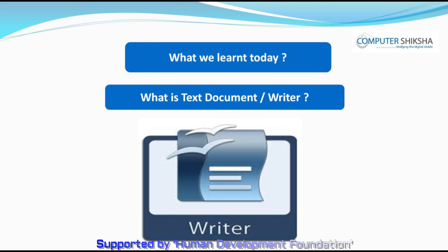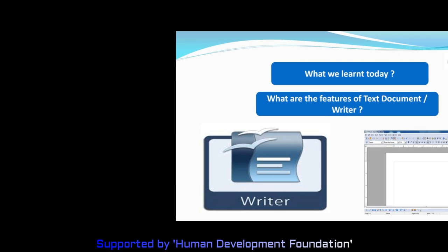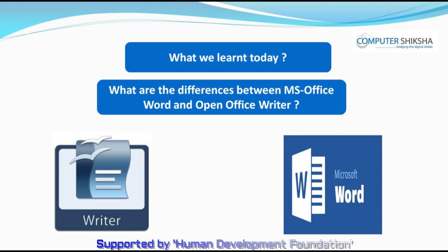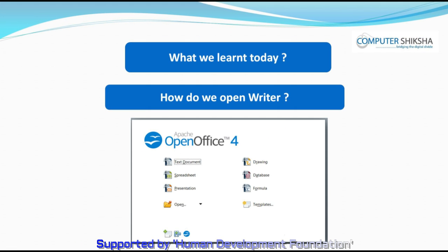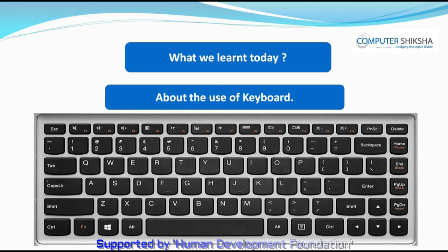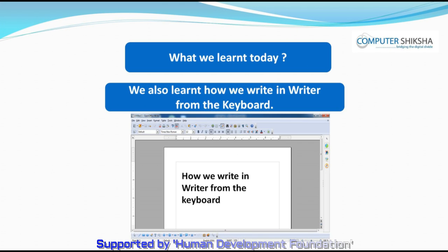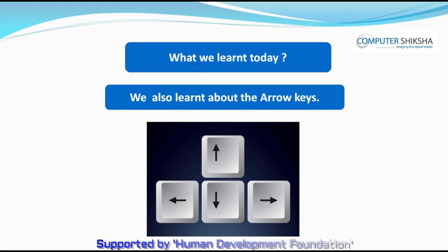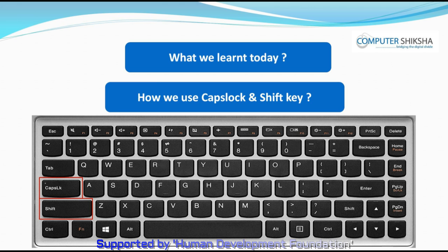In today's class, we learned what is Writer and what are the various features of Writer. We learned about the differences in OpenOffice Writer and MS Office Word, how we open Writer, and about the documents in Writer. We learned about the keyboard, how we write using the keyboard in Writer, the differences between Delete and Backspace, the arrow keys, and how and for what we use the caps lock and shift buttons. Thank you.